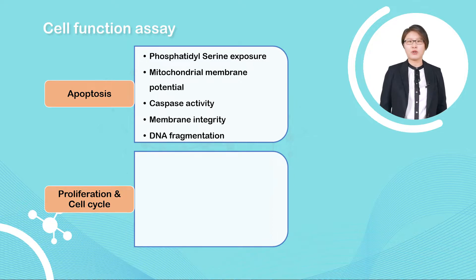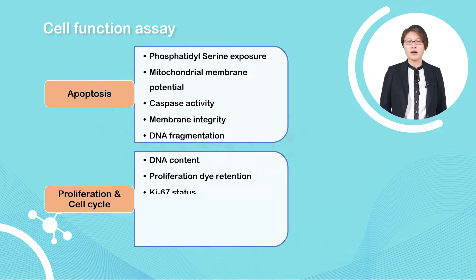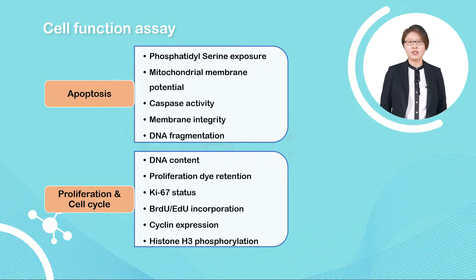Proliferation and cell cycle can be assessed by DNA content, CFSE tracing, and BrdU incorporation, among others.